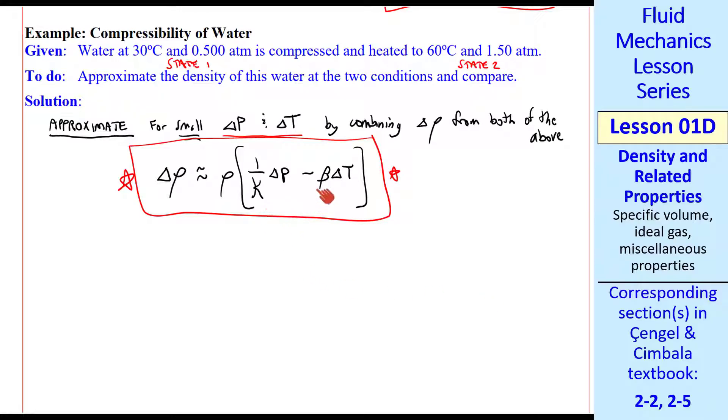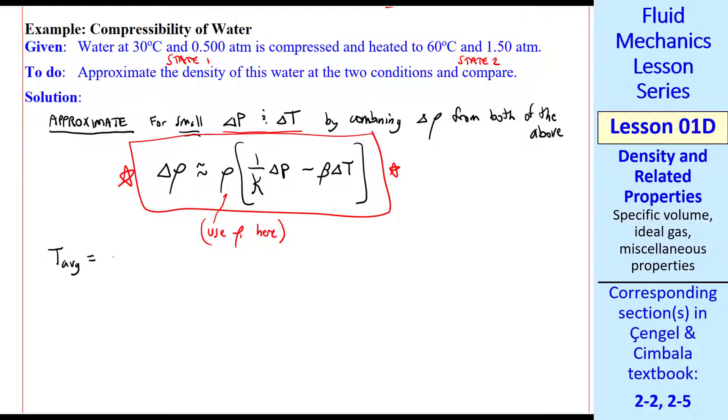But we're going to use a constant kappa and a constant beta at some average temperature and pressure. And we'll use rho 1 here.